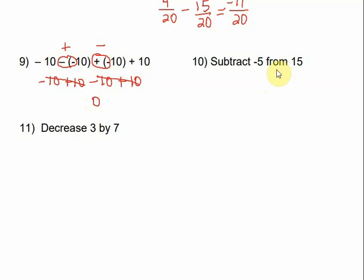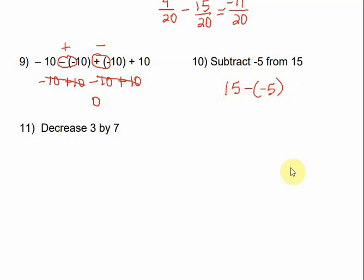Numbers 10 and 11 get a little tricky when subtracting using words, because it's very important to put numbers in the right order or we'll get the wrong sign. Number 10 says: subtract negative 5 from 15. Since we're subtracting from 15, we start with 15 and then subtract negative 5. We have two signs touching — negative and negative — so that becomes plus: 15 plus 5 is 20.